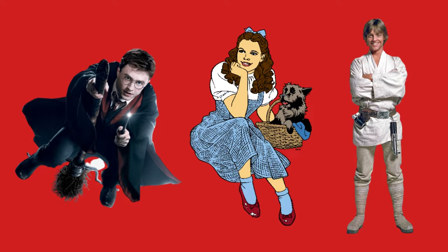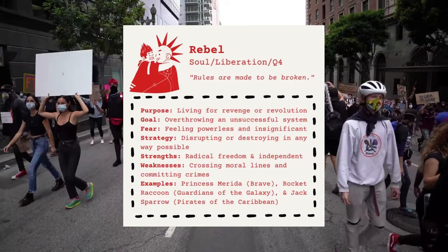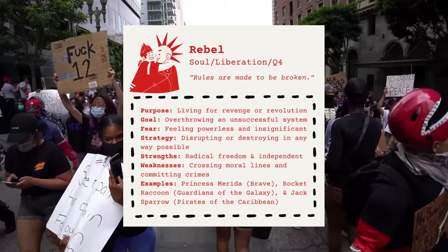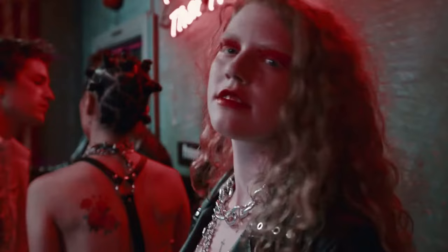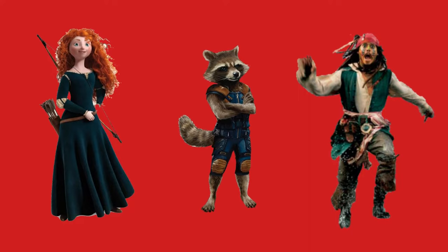Moving on to the fourth and final quadrant, we have the rebel, the magician, and the hero. The rebel is a soul-type archetype that believes liberation is how one leaves their mark on this world. Their purpose is living for revenge or revolution. These characters attempt to overthrow an unsuccessful system and fear feeling powerless and insignificant. To avoid this, they disrupt or destroy modern boundaries. They are radically free and independent, but often cross commonly accepted moral boundaries and get caught up in the criminal world. Famous rebel characters include Princess Merida, Rocket Raccoon, and Jack Sparrow.